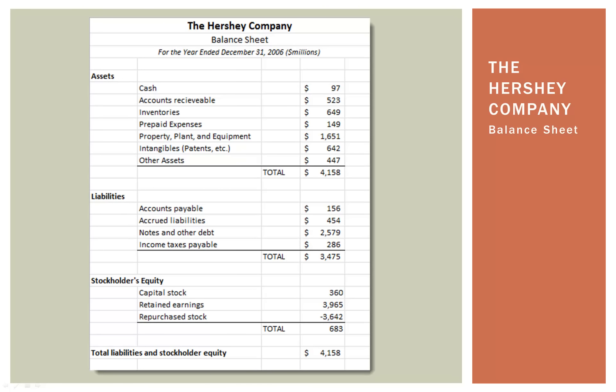Let's look at a company's actual balance sheet — the Hershey Company's balance sheet for the year ending December 31st, 2006. You'll notice they have three sections: an assets section, a liabilities section, and a stockholders' equity section. The important thing to notice is that total assets came to just over $4.1 billion, and if you add up liabilities and stockholders' equity, that also adds up to just over $4.1 billion. They're the same — the balance sheet balances out.